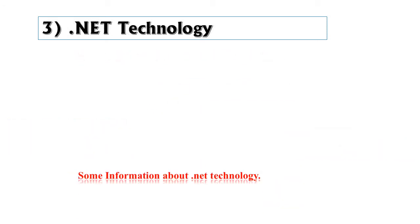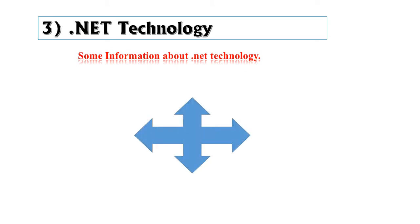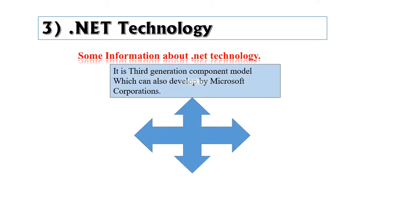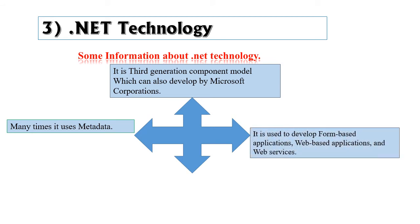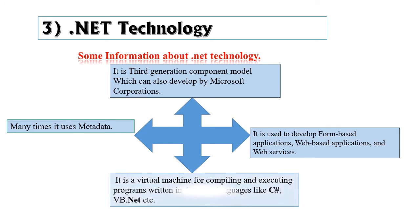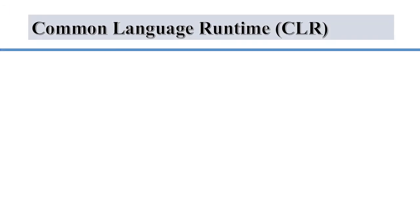The third and last origin is .NET technology. It is a third-generation component model also developed by Microsoft. It makes heavy use of metadata. It is used to develop form-based applications, web-based applications, and web services. It is a virtual machine for compiling and executing programs written in different languages like C# and VB.NET. We discussed the .NET framework in lecture 1 — if you have not watched that lecture, please go and watch it.